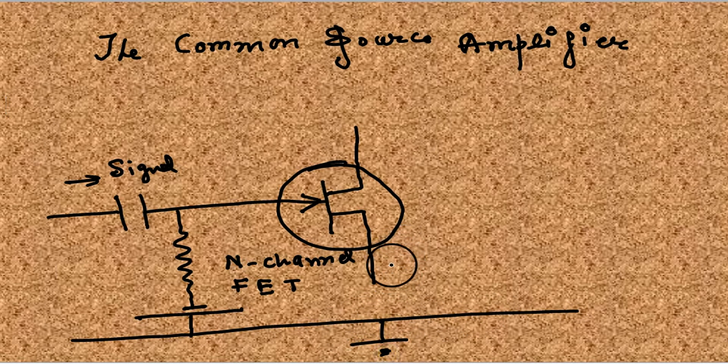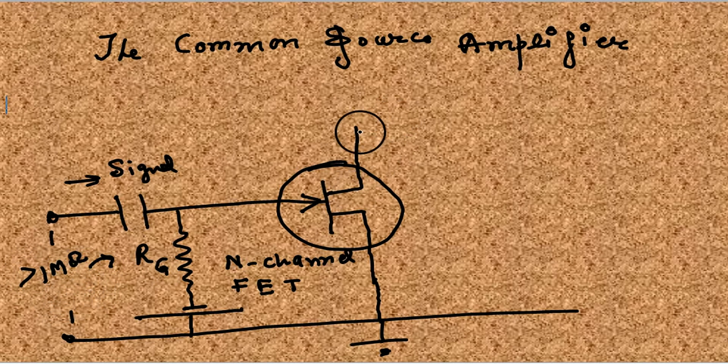This battery is grounded, the source is grounded. RG is the gate resistor, which is very high value, one megaohm.